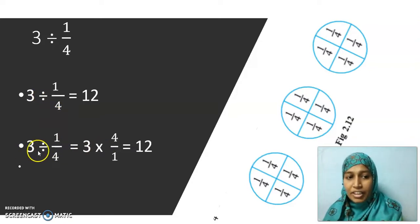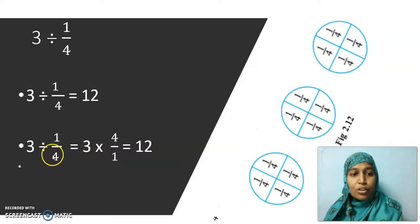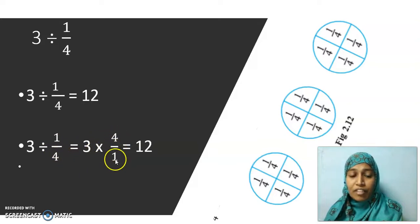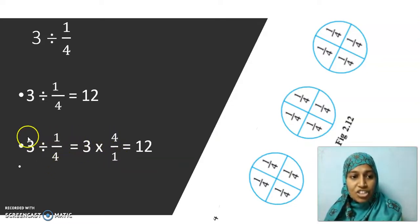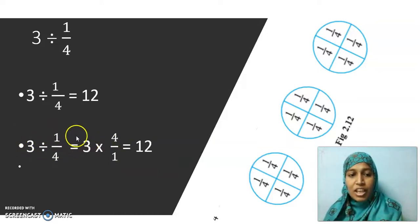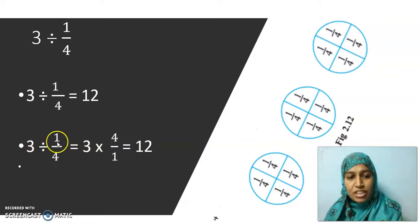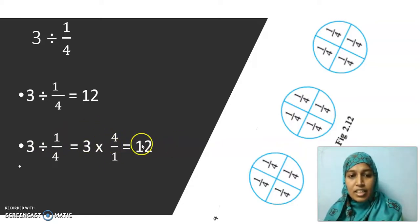See here: if I write 3 divided by 1 by 4, it is nothing but 3 multiplied by — I am writing in reverse — not 1 by 4, but 4 by 1. When the division symbol has changed to multiplication, I am changing this fraction alone. I didn't change anything with the whole number or the first number. Only the second number followed by the division symbol has been changed upside down. So I got the answer as 12.